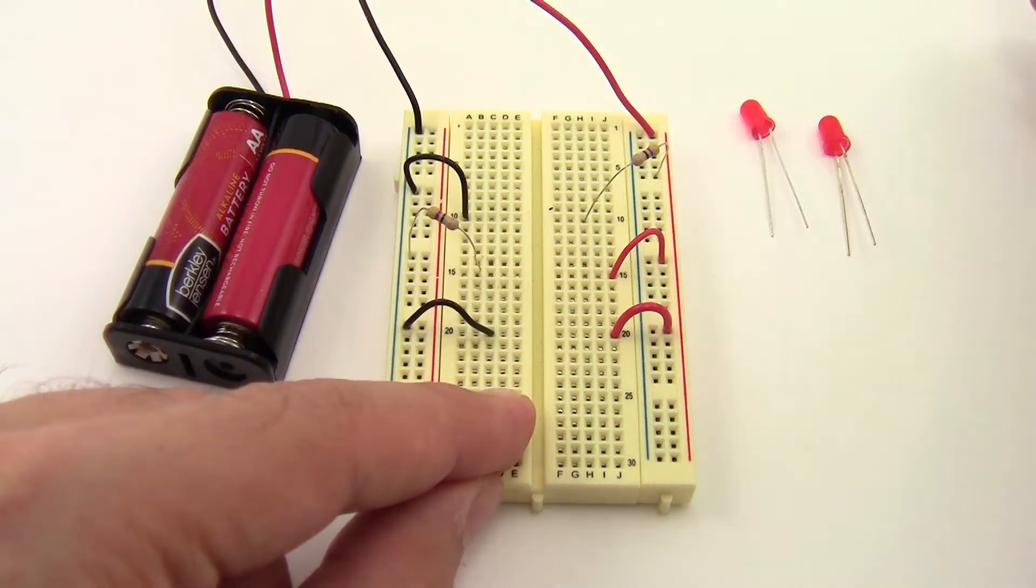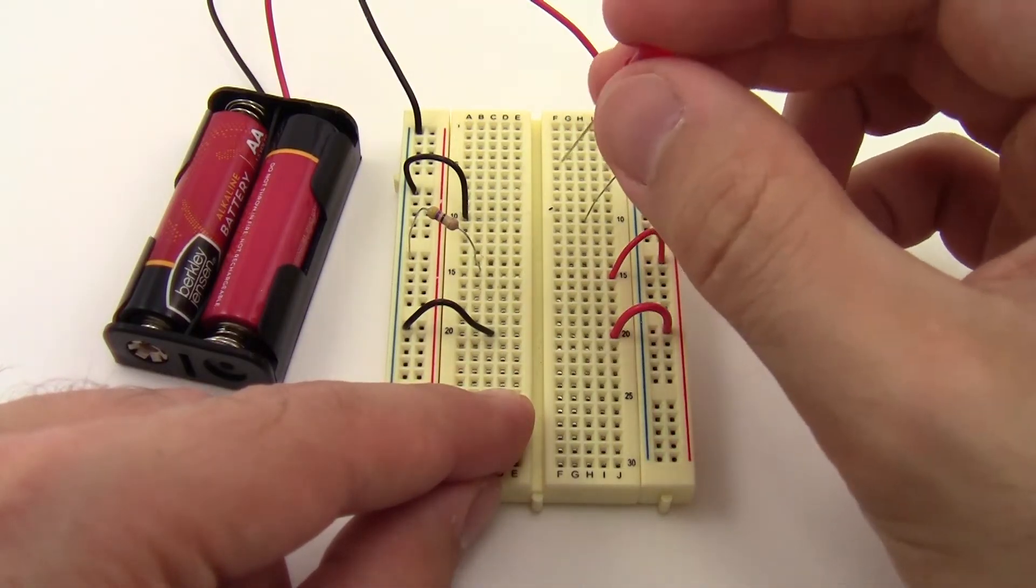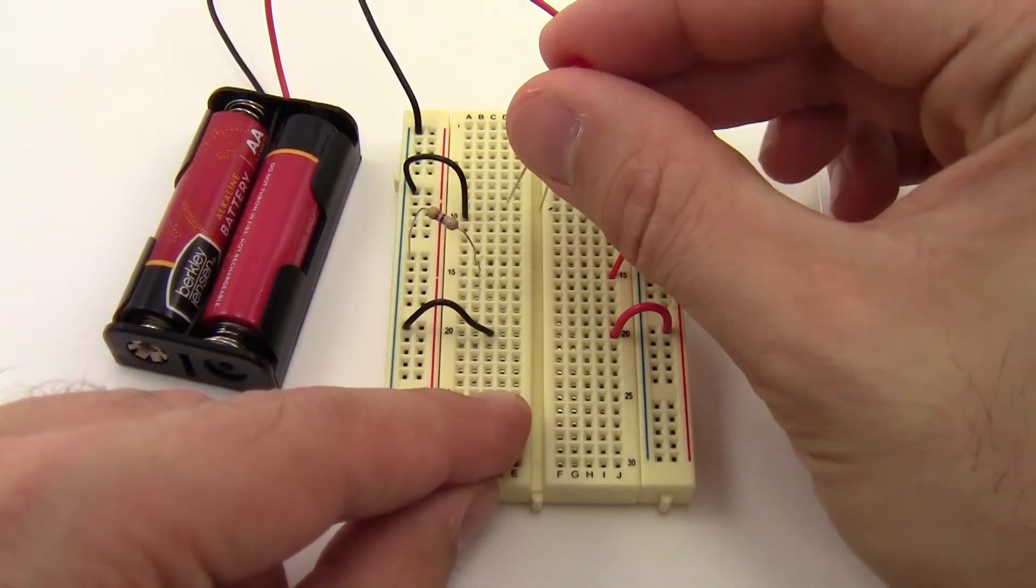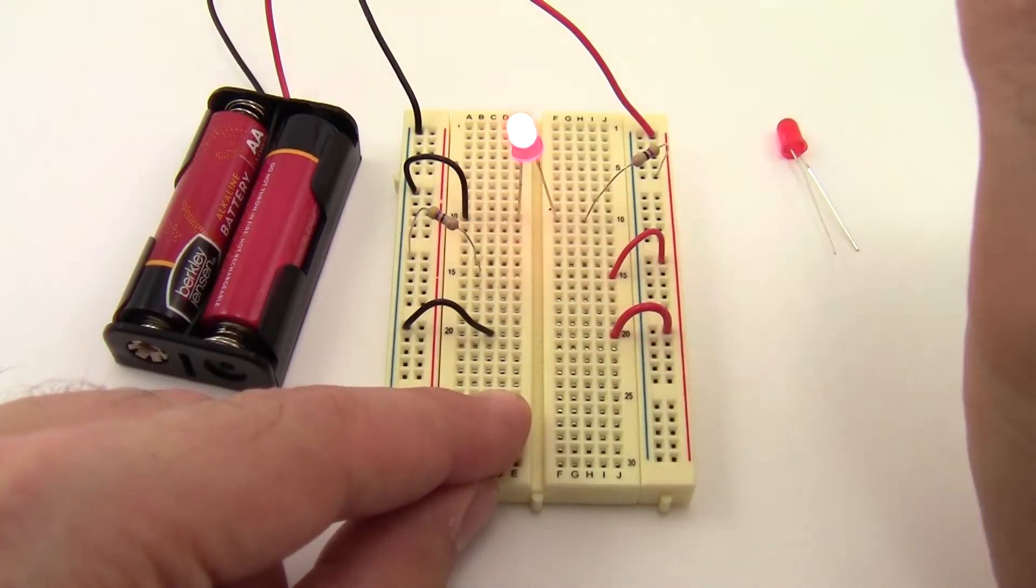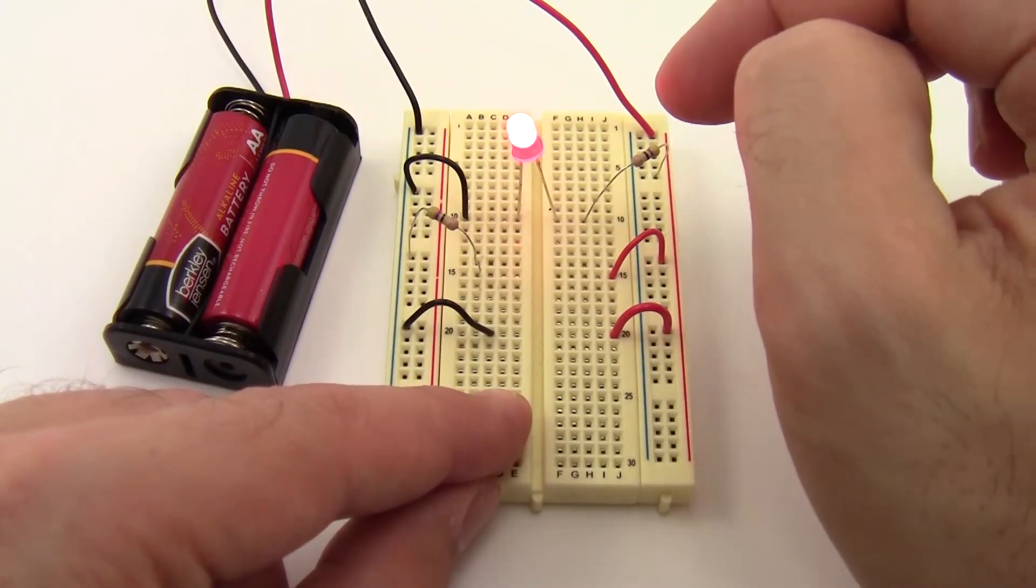If we take a new LED and put it in this first circuit that has the current limiting resistor on the positive side, you will see that the LED will light up and stay lit. It's not burning out because this resistor is helping to limit the current flowing through the LED.